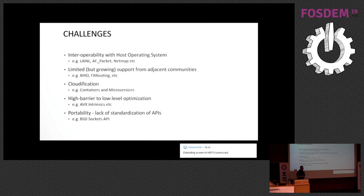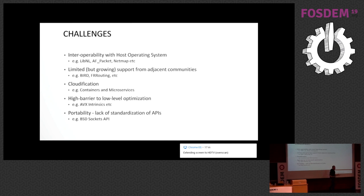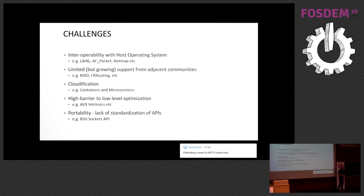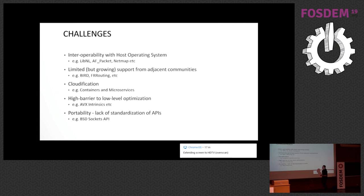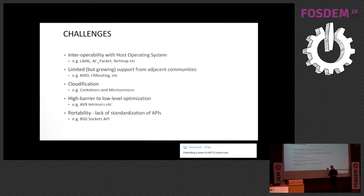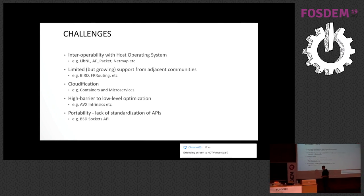Our last challenge is the portability of APIs and the lack of standardization. We have a huge community but very few standards within it. The kernel gives you things like the BSD sockets API, which has been around since the 70s or 80s — a very well known standard — or the netlink interface. We don't have those kinds of standards yet in user space networking. If I develop something against FStack, one user space network stack, it's not portable to FD.io VPP — and that can be a challenge in itself.